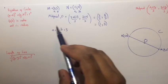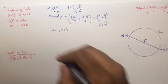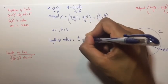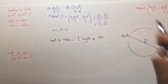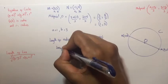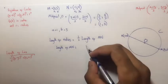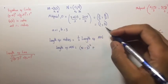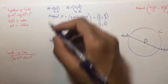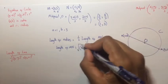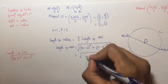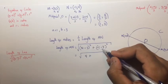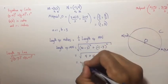Now let's find the value of the radius. The length of the radius is equal to half the length of MN, because the radius is half of the diameter. The length of MN equals √((y₂ − y₁)² + (x₂ − x₁)²), which is √((4 − 2)² + (−1 − 3)²) = √(4 + 16) = √20.